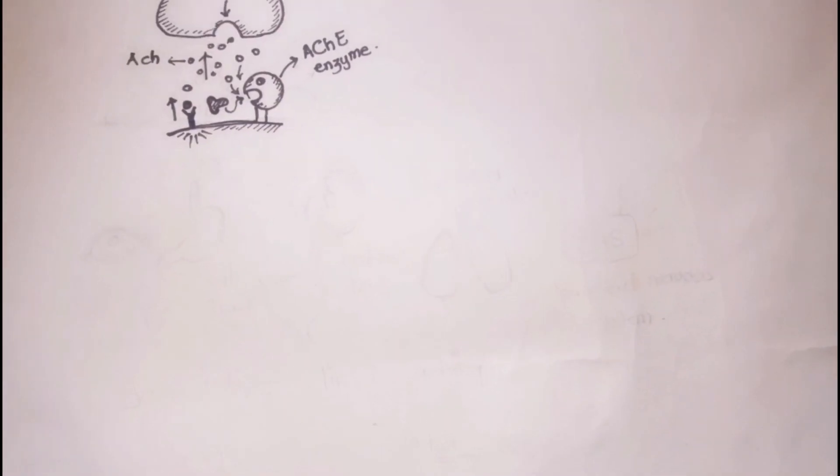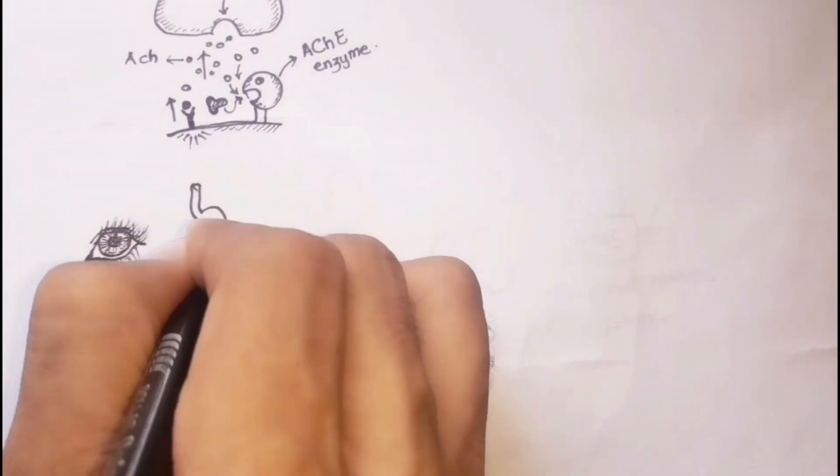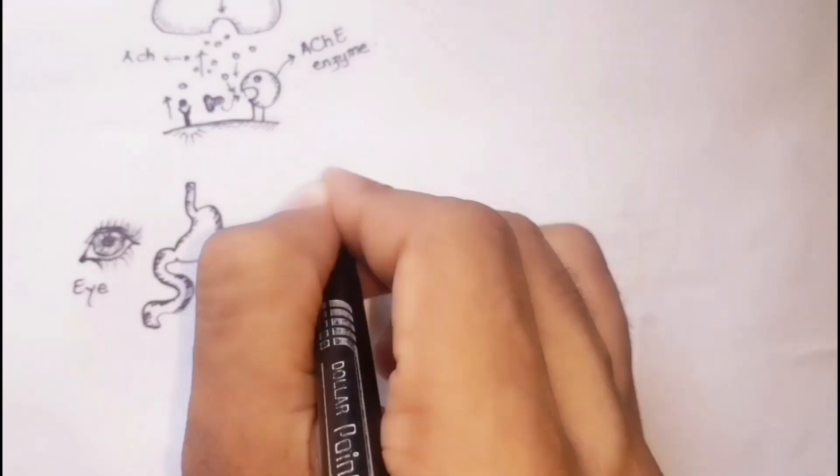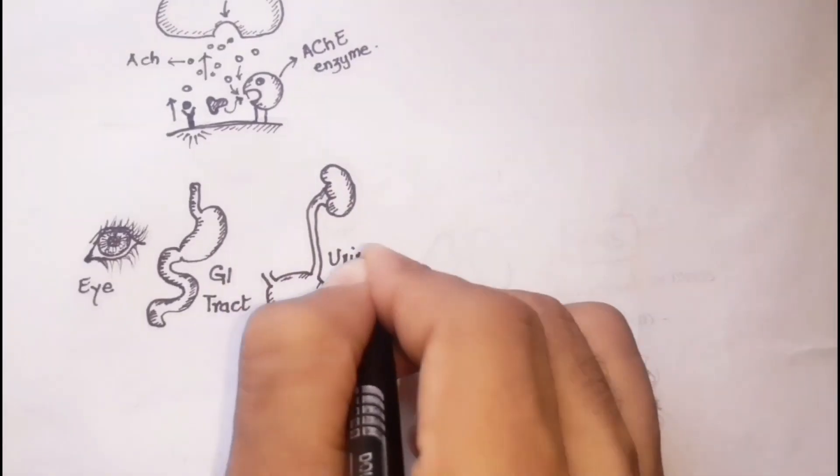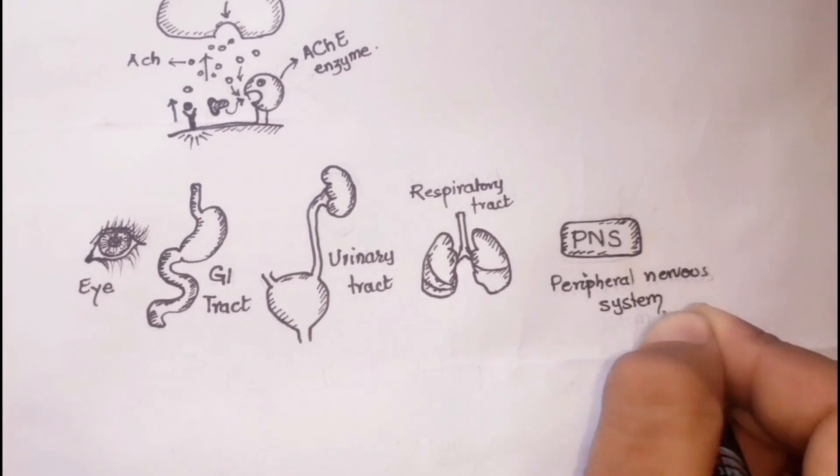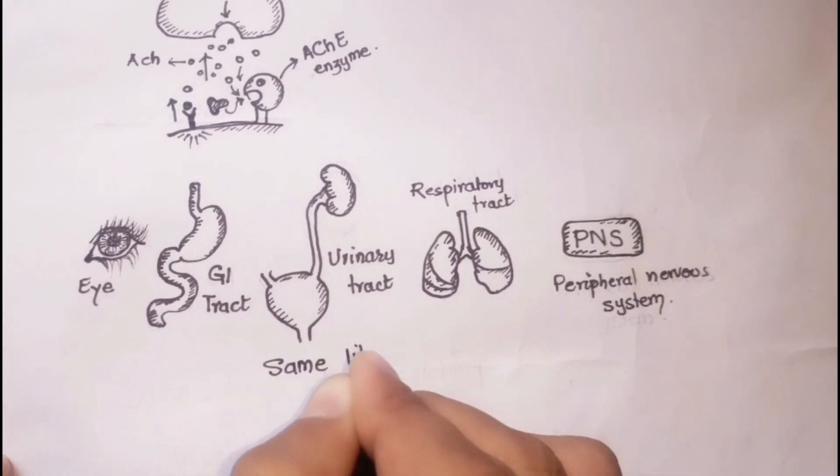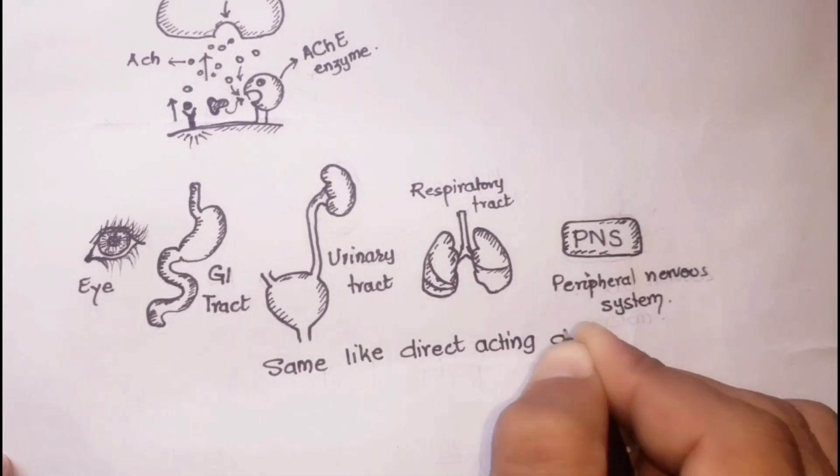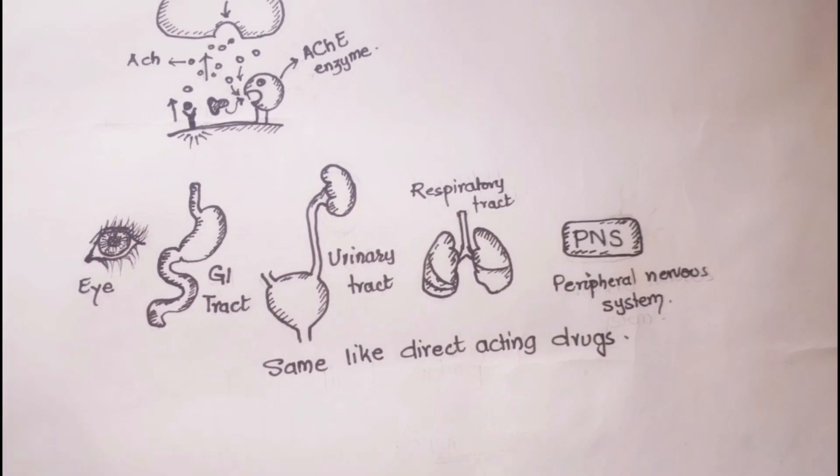Effects of indirect-acting drugs or anticholinesterases on the eyes, GI tract, urinary tract, respiratory tract, and peripheral nervous system are the same as that of direct-acting drugs, as we discussed in the previous video.